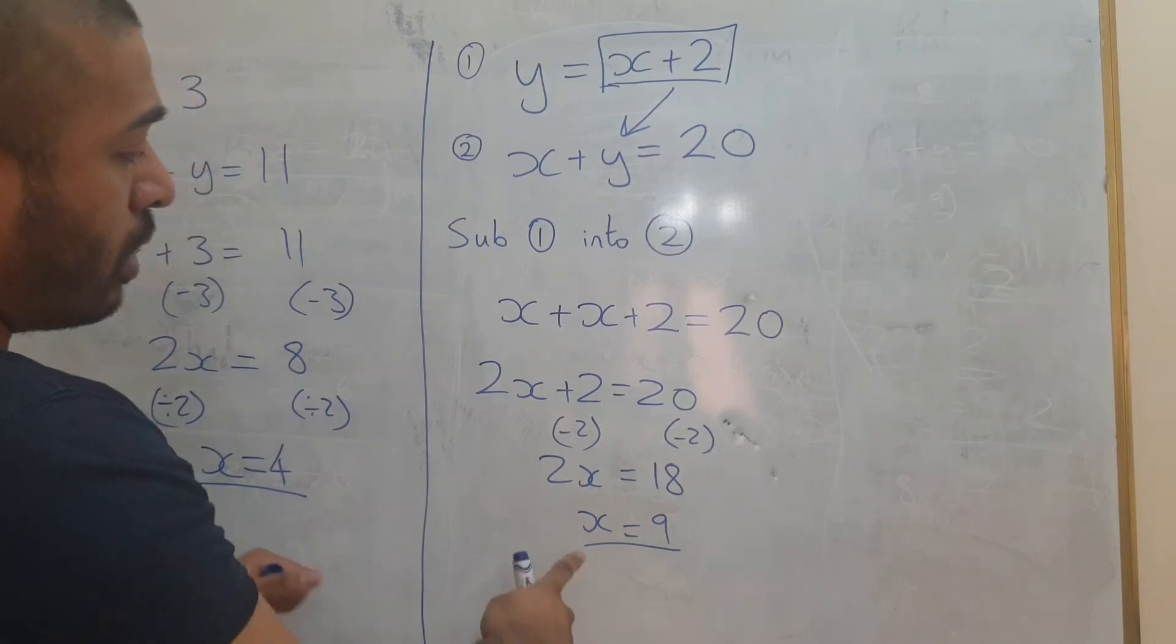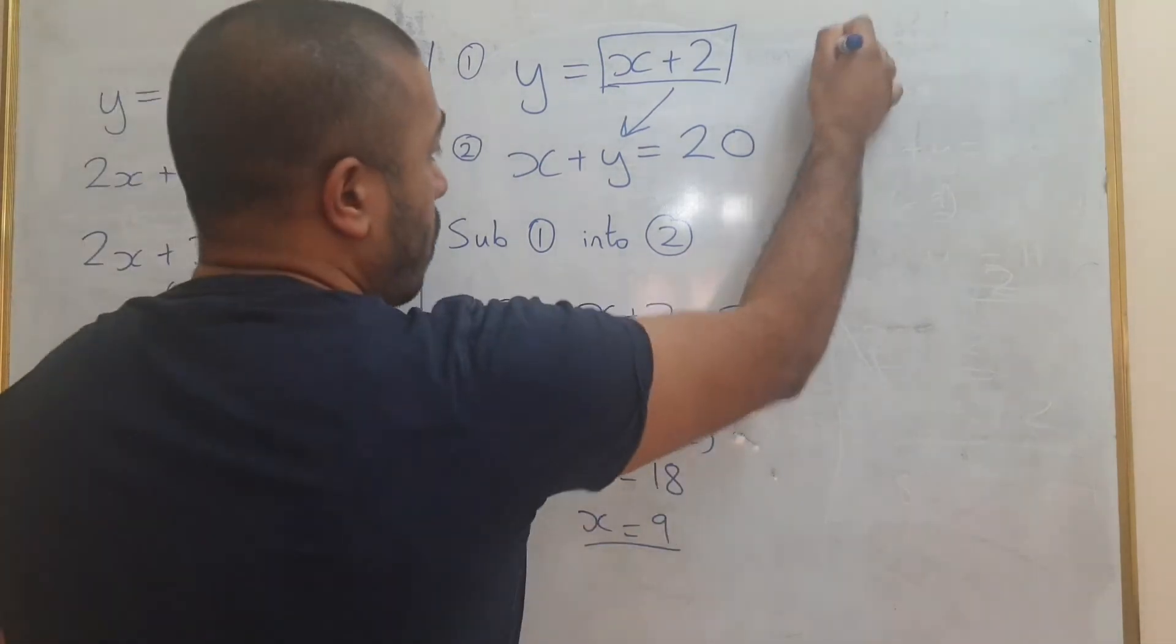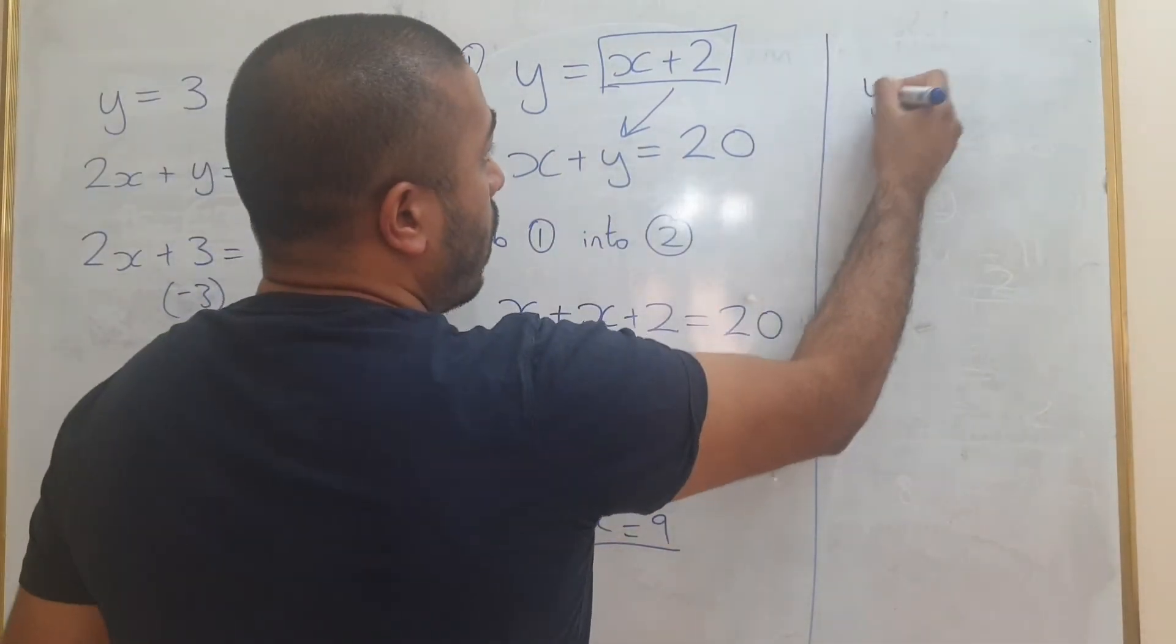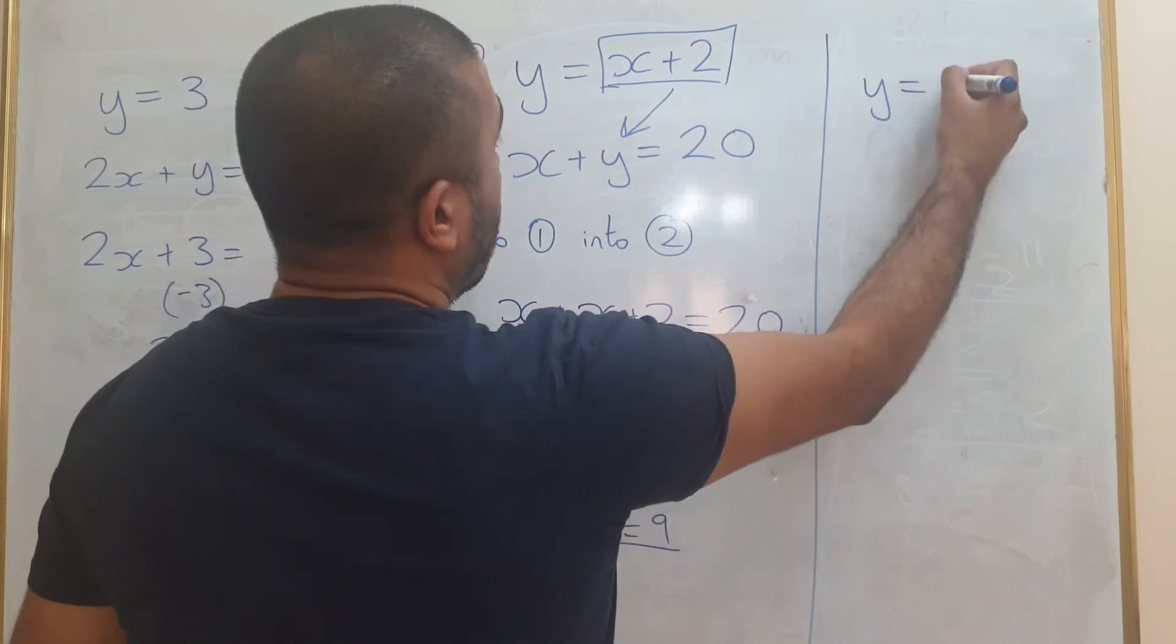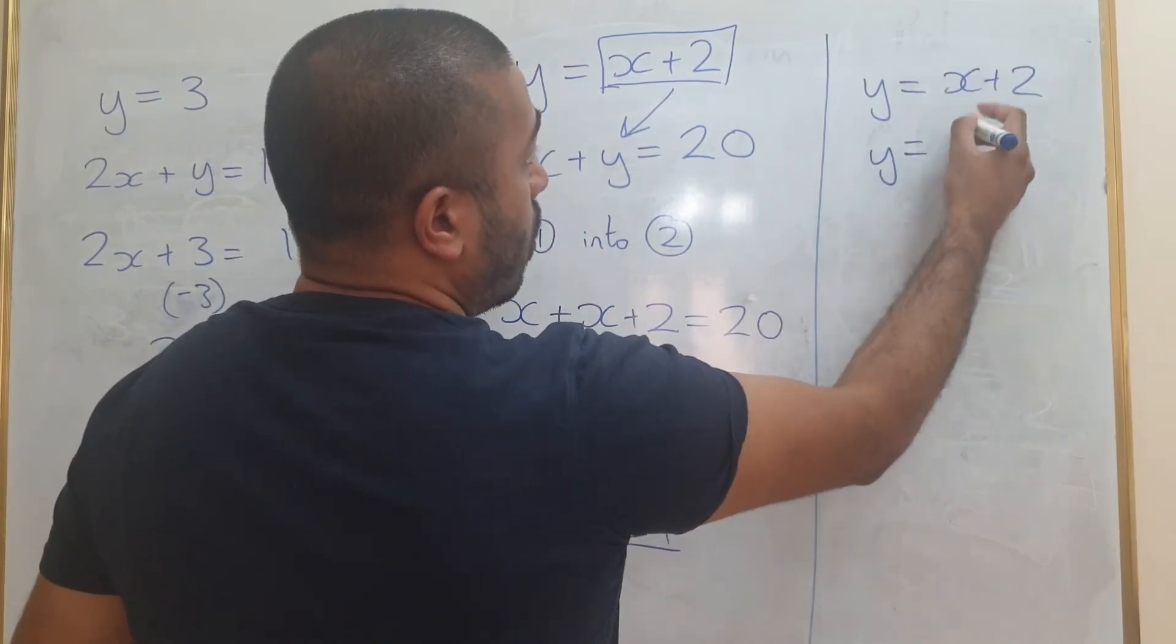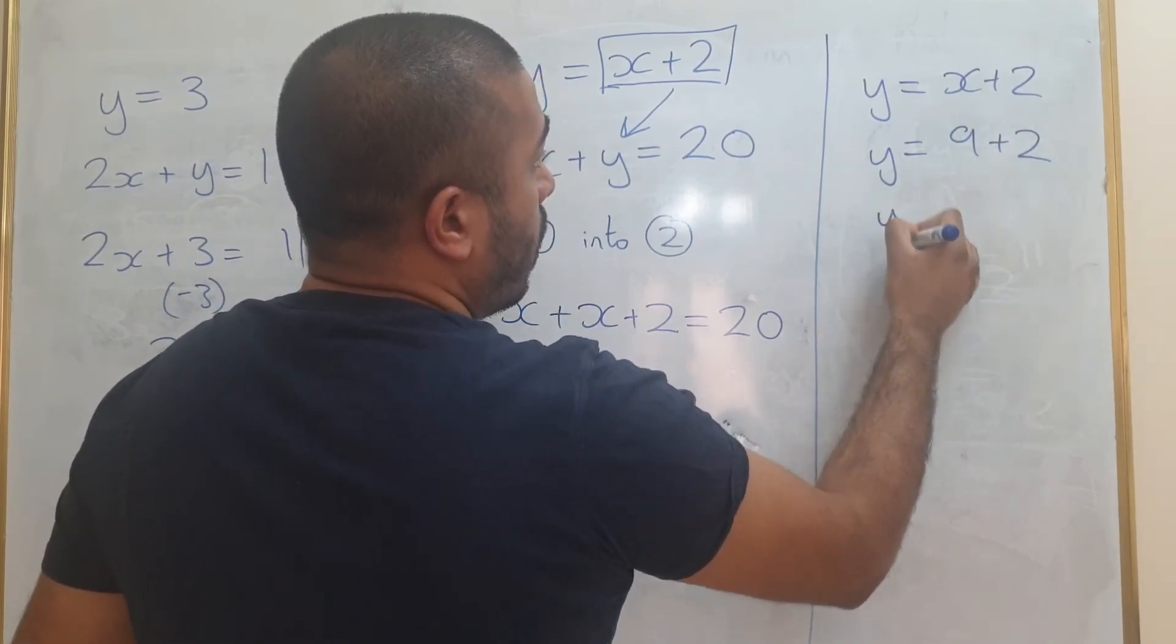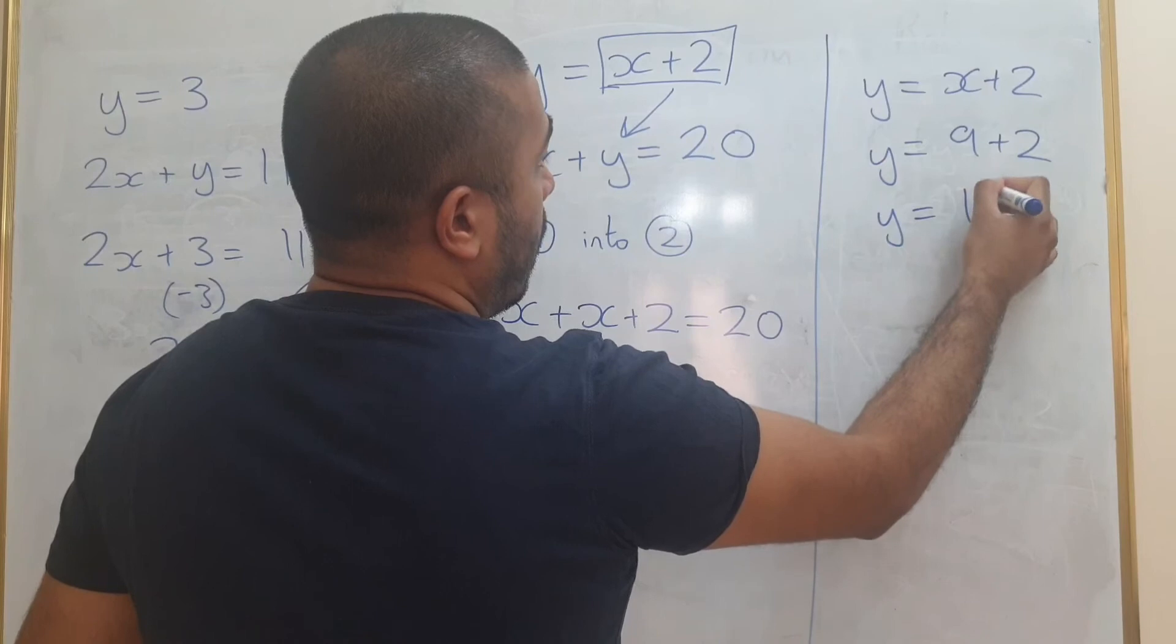Once you've got an answer for x, you can substitute that back into equation 1 just to check if it's correct. So what I'm going to do is y equals x plus 2. Y equals 9 plus 2. So y equals 11.